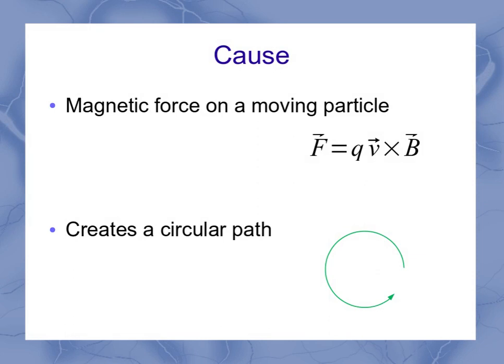Remember from that video that a magnetic field on a moving particle creates a force given by the cross product Q times V cross B. We saw that if the particle enters at a perpendicular direction to the field, it will cause a circular path. I have a lot more detail in that video.